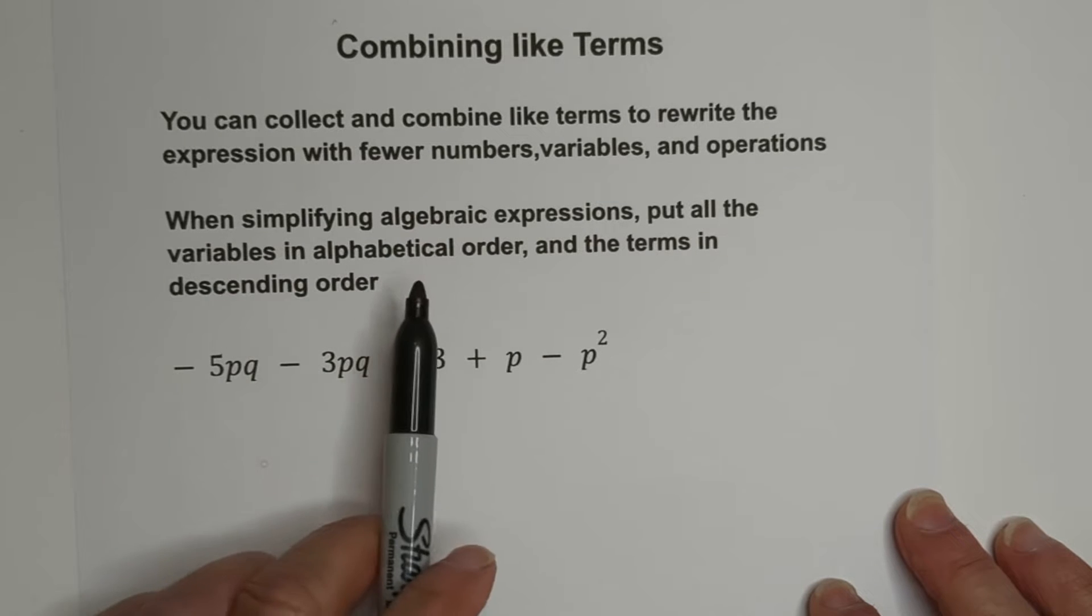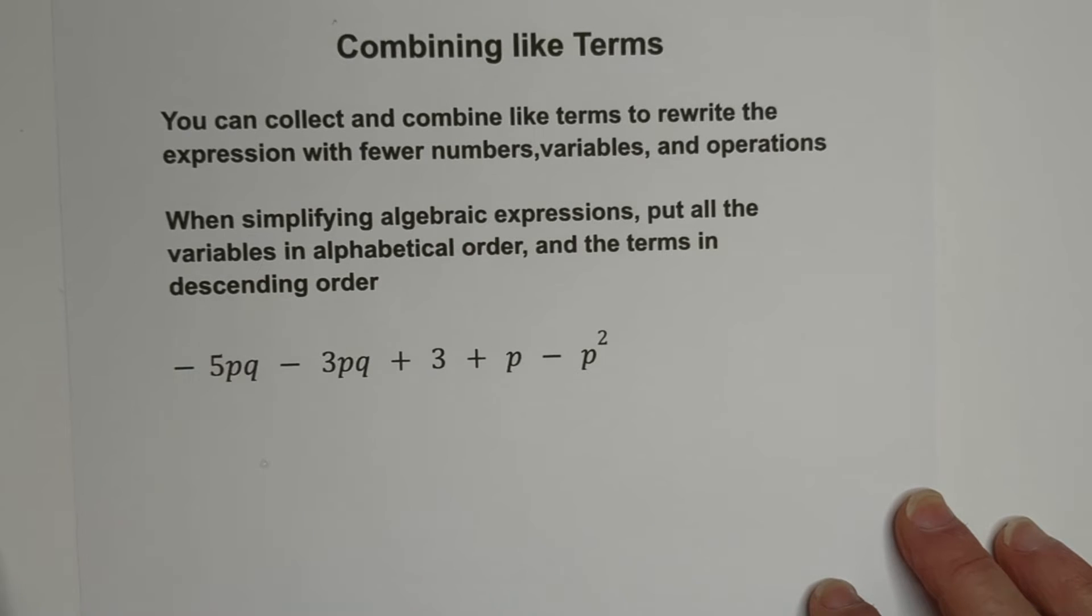When simplifying algebraic expressions, put all the variables in alphabetical order and the terms in descending order. Basically what you do is look at the exponent and put it in descending order, the greatest exponent first, and then the constant is always last. So let's combine like terms.